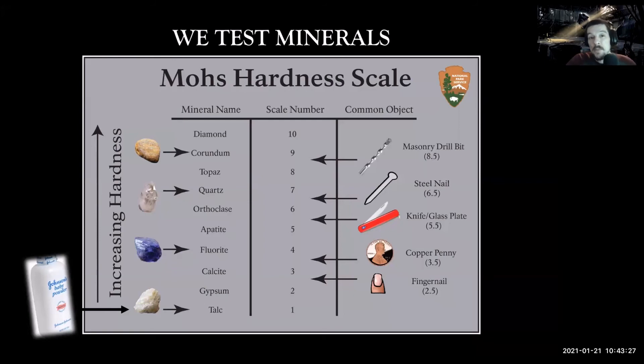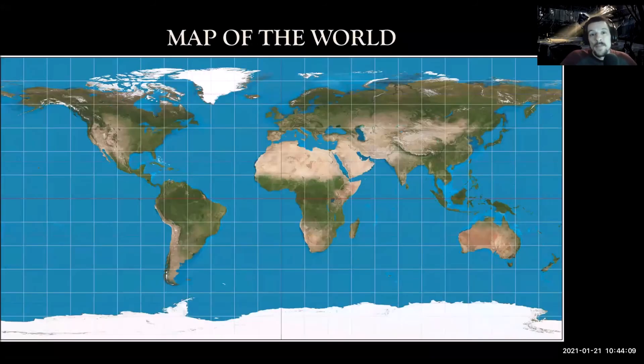Practice reading your Mohs hardness scale so you'll be able to determine what mineral I'm talking about. If I were to say a mineral can scratch quartz but not corundum, what mineral am I talking about? That would be topaz, because topaz has a hardness of 8. It can scratch quartz, but it cannot scratch corundum.